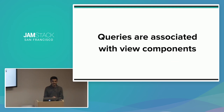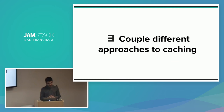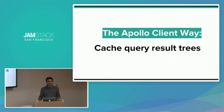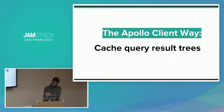One crucial concept is that queries are associated with view components. In an email application, you might have one query fetching the list of emails in your inbox, and another fetching only new emails. There are a couple of approaches to GraphQL result caching. The Apollo Client way — which I'll focus on — takes these result trees from GraphQL queries and caches those trees. Relay, another popular GraphQL client, instead works with the entire graph of information and figures out what's already cached to fulfill a query.